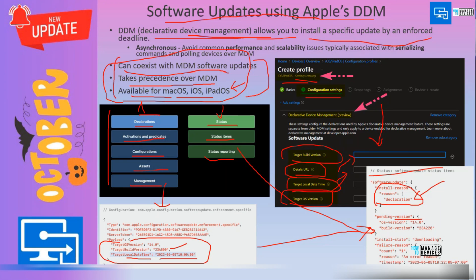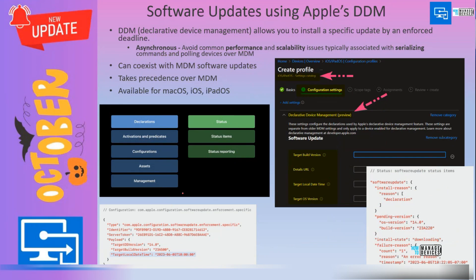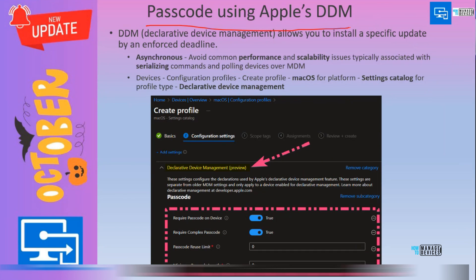You would be able to see pending version, build version, and installation status — it shows downloading — and a failure reason field. If there is any failure, it will provide the error reason. That gives you some details of the DDM components that Apple is implementing alongside the MDM protocol. They are not replacing MDM; they are adding DDM on top of the MDM protocol.